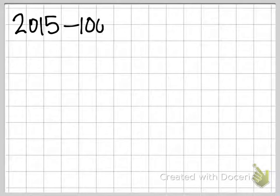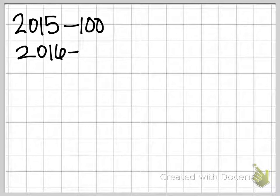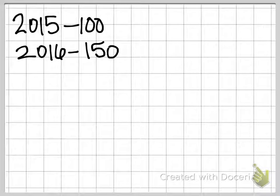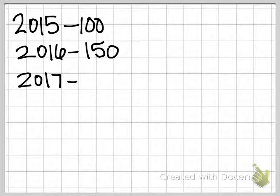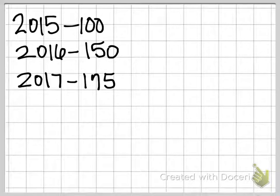So let's make this make more sense, hopefully. Give you some real numbers here. So let's suppose 2015 is our base year, and so our price index is 100. And then the next year, in 2016, we're going to see that price index increase to 150. And then in 2017, it's going to go up again. It's going to go to 175.